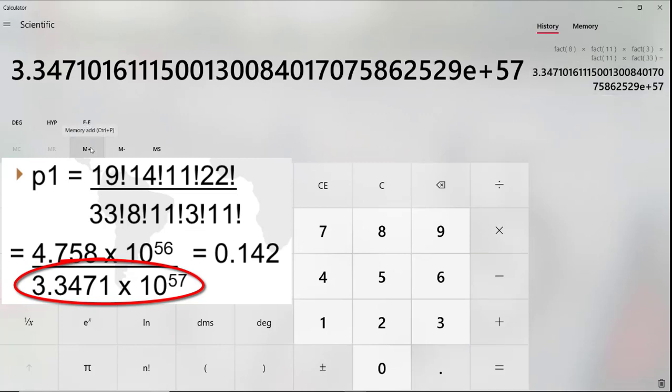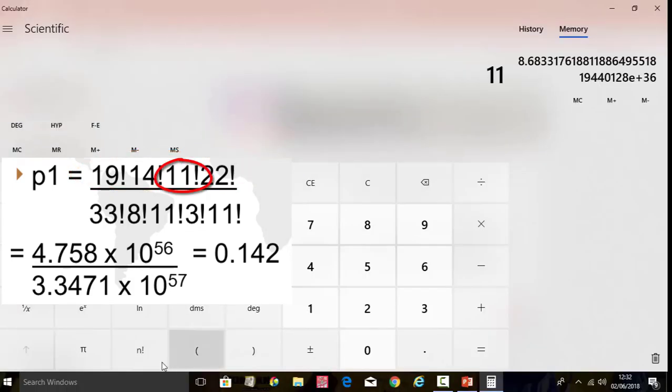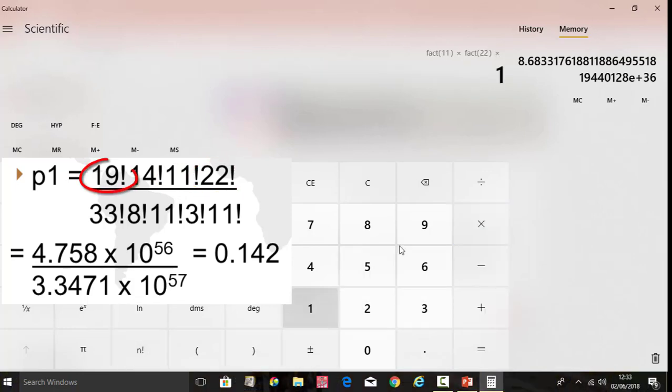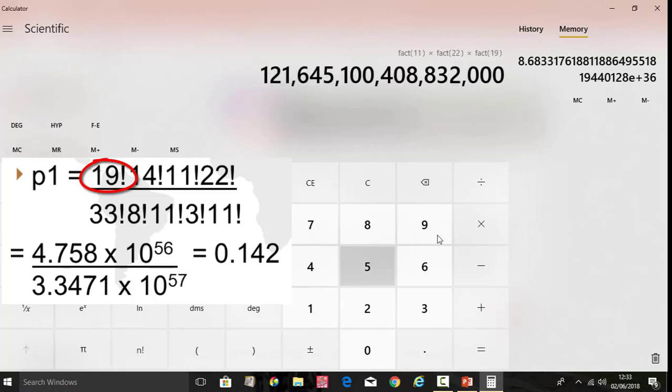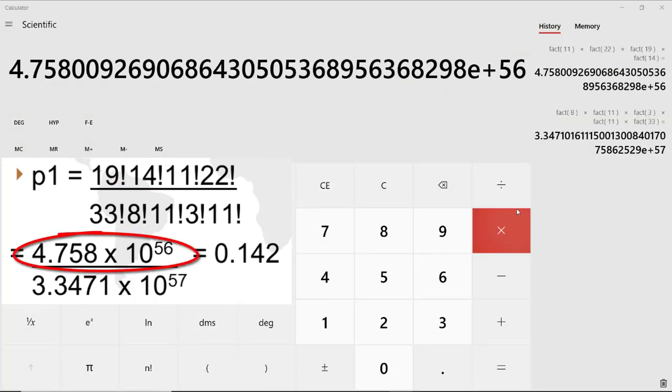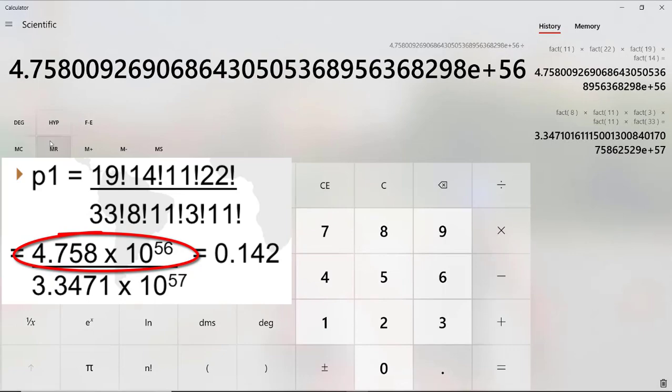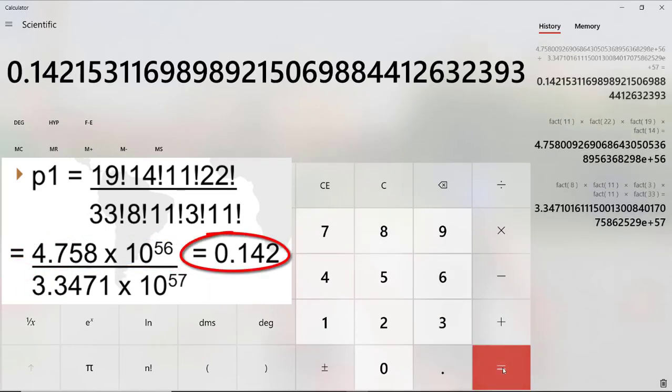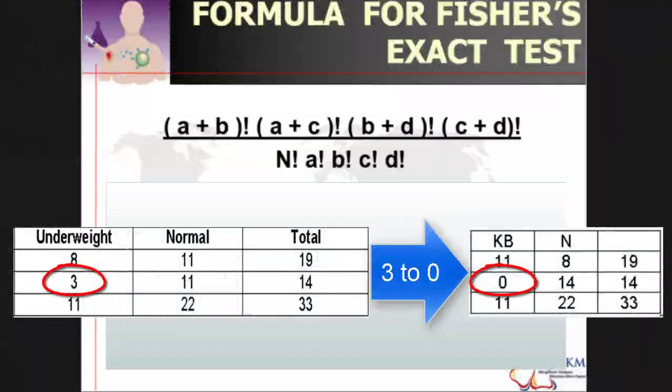So we put inside memory. So now we do the first one, which was 11, 22, 19, 14. So this was the answer. So you divide by memory recall, then you get the answer of this value. So big, but this is not the only table.